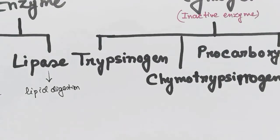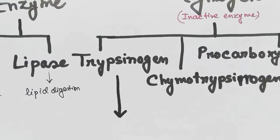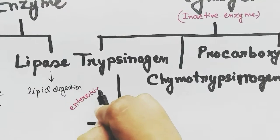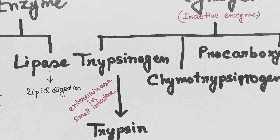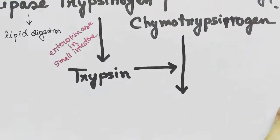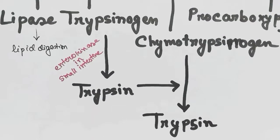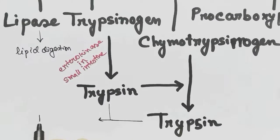Among the active enzymes are amylase, for carbohydrate digestion, and lipase, for lipid digestion. When trypsinogen reaches the small intestine, it is converted into trypsin with the help of enterokinase. Trypsin also stimulates chymotrypsinogen to become chymotrypsin. Trypsin helps in protein digestion.